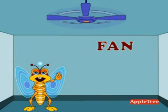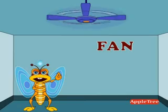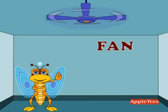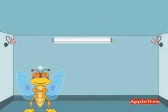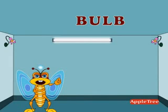A fan is an electrical device with blades which moves fast to produce air. A bulb is an electrical device which brightens the room.